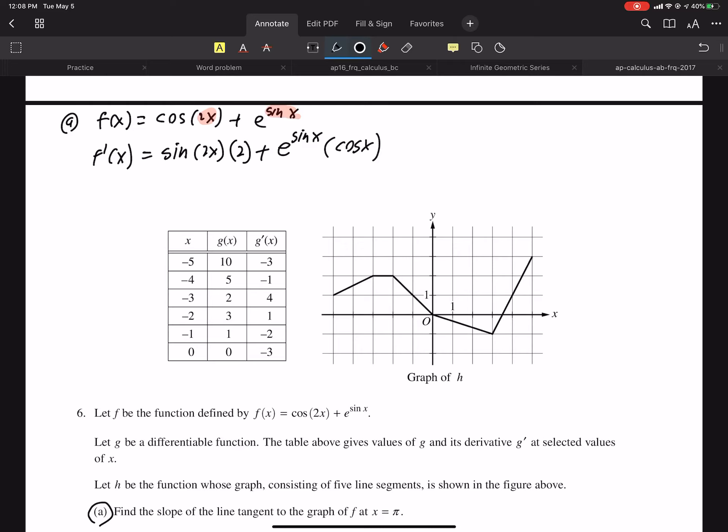So side work, f of π is cosine of 2π plus e to the sine π. Well, cosine of 2π is 1, and sine π is 0. So that's going to be 2. So this is going to be h prime at 2. And then f prime π, we just found that. f prime of π, we found it up here, except Yoshida put x there and he lied to you. It's π, it's negative 1. I like this problem now.